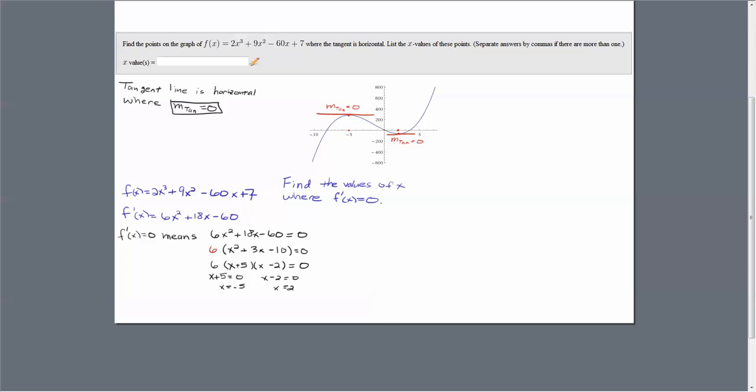We can verify this by plugging -5 back into the derivative - we should get zero. This gives us the formula for the slope, so if we plug -5 back in, we get zero. And sure enough, we check that. If we plug 2 back into the derivative, we should also get zero.